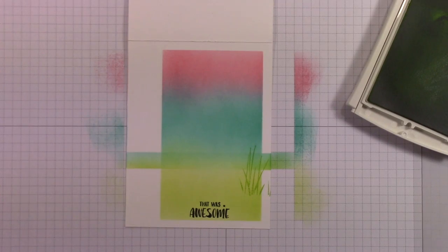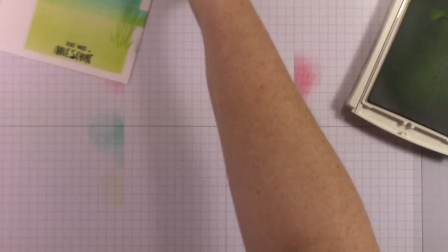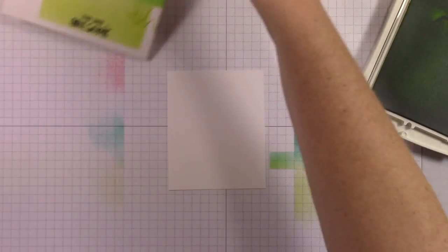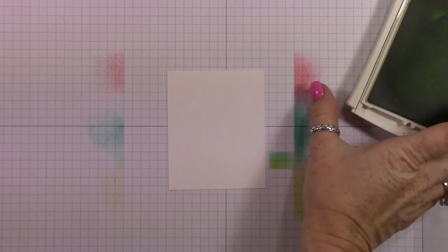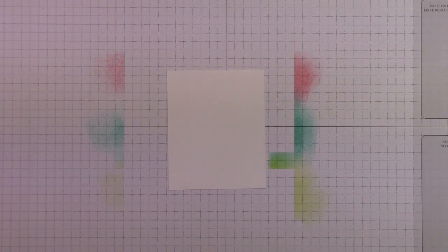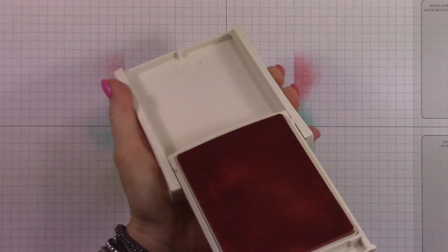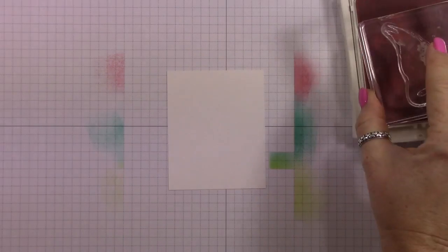I'm going to stamp these little pieces of grass here in lemon lime twist. Lemon lime twist is one of my new favorite colors. It reminds me a lot of the twisted citron color from distress ink. It's a super similar color, so I think that Stampin' Up did a great job by giving us that color, and I hope it sticks around.